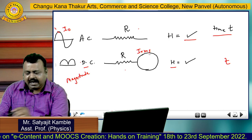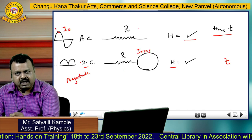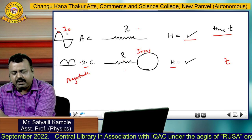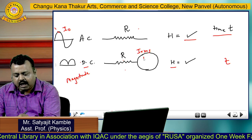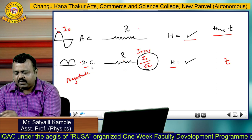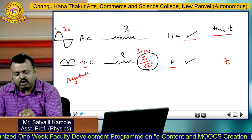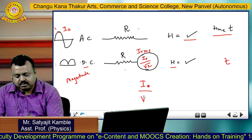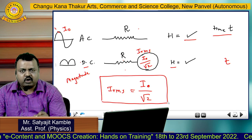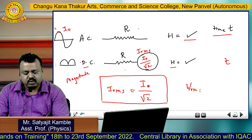So what is RMS value? RMS value is that value of direct current which generates the same amount of heat in the same time T when passed through the same resistance R as in the case of alternating current. And experimentally it is observed that alternating current of peak value I naught and direct current of value I naught upon root 2 generate the same amount of heat in the same time when passed through the same resistance R. Therefore, I naught upon root 2 is called the RMS value of current. Similarly, we can write RMS value of voltage as V_RMS, and it is equal to V naught upon root 2.